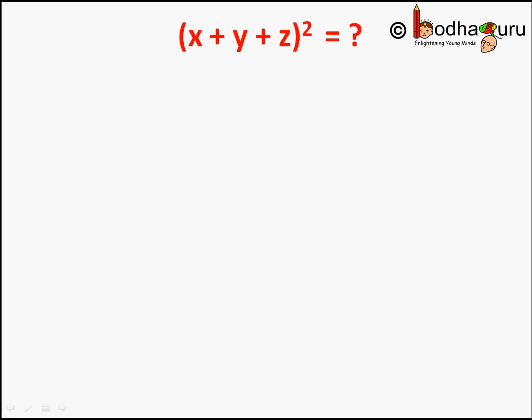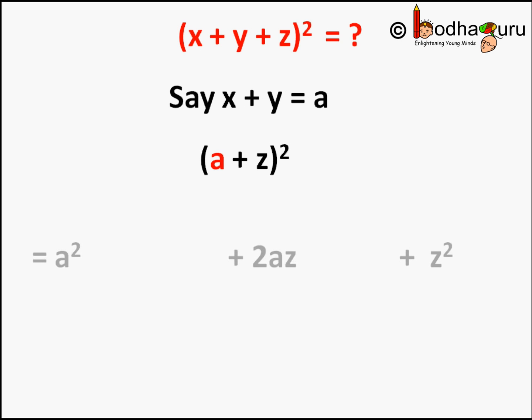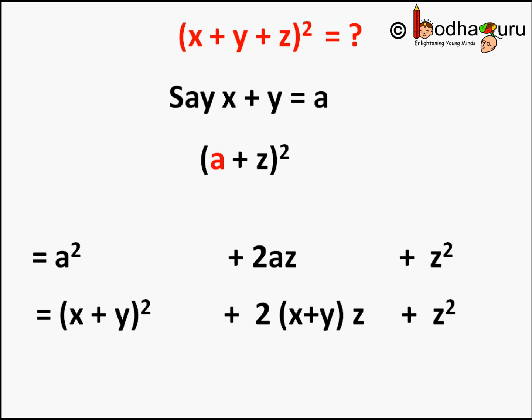Let us assume x plus y is equal to a. We can write x plus y plus z whole square as a plus z whole square. Then it becomes two variables only, and we can expand it as a square plus 2az plus z square, where a is equal to x plus y.